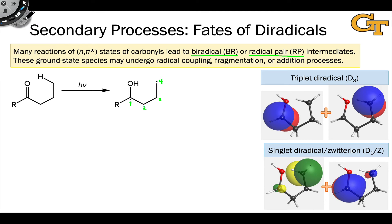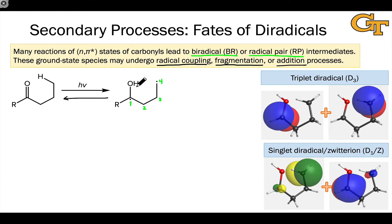Constraining ourselves to biradical structures, there are three things that can happen to a biradical: radical-radical coupling, fragmentation or elimination, or addition processes. Addition includes atom abstraction, since addition to a sigma bond — for example, going backward to reform starting material — is akin to addition of the radical center to the OH sigma bond, cleaving it and transferring an atom. We can lump atom abstractions in with addition. But the main focus here is on radical-radical coupling and fragmentation.